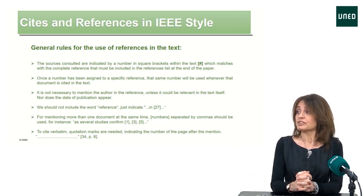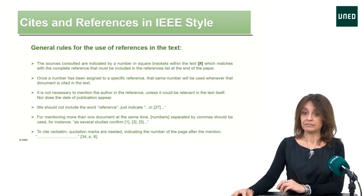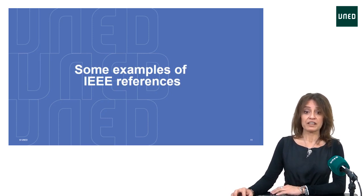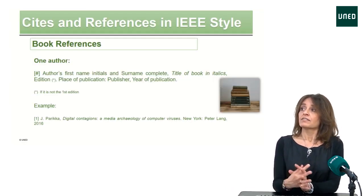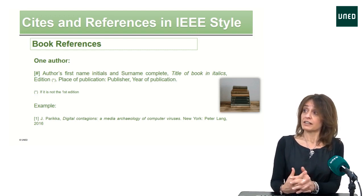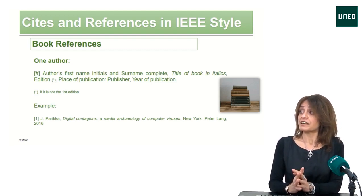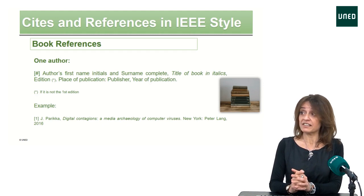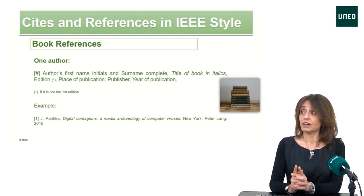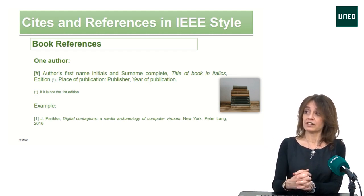To cite verbatim, quotation marks are needed, indicating the number of the page after the mention. For book references, if there is just one author, we cite them with the first name initials and the surname complete, then the book title in italics, the edition if it is not the first one, the place of publication, colon, publisher, and year of publication. There is an example here to see it better.